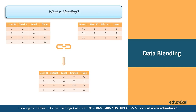First, a row in the left table does not have a corresponding row match in the right table, as indicated by the null value. And second, there are multiple corresponding values in the rows in the right table, as indicated by the asterisk or the star sign.